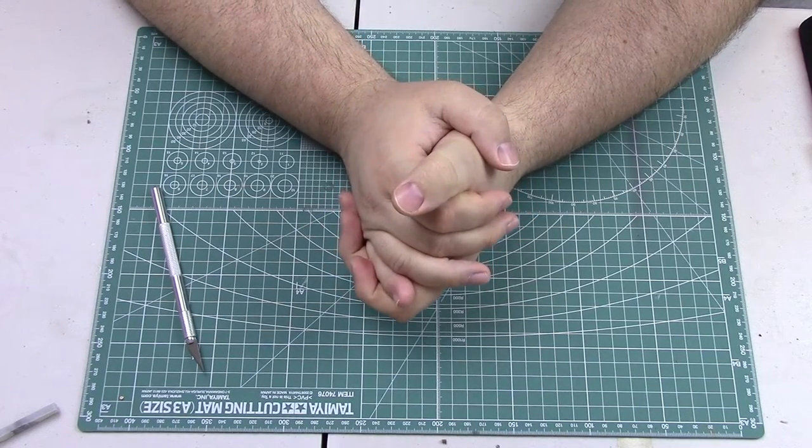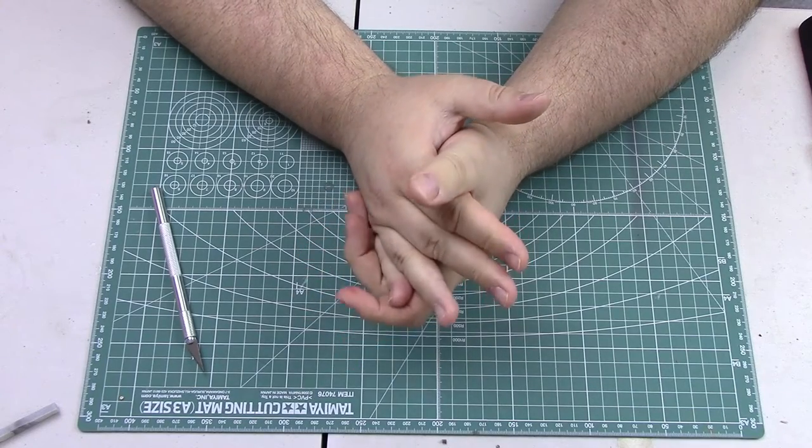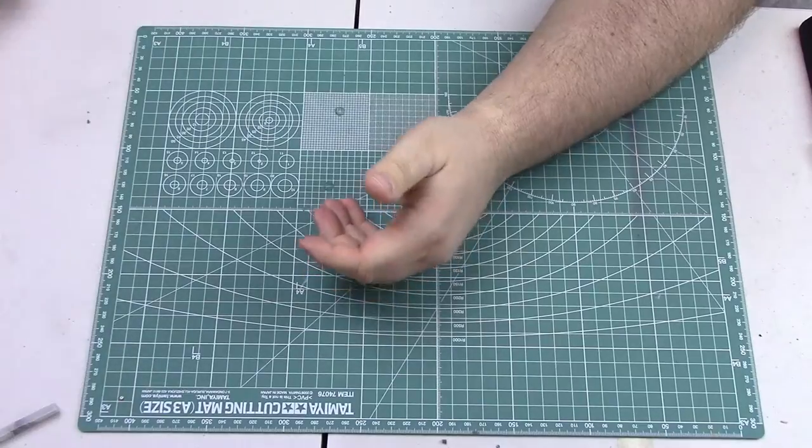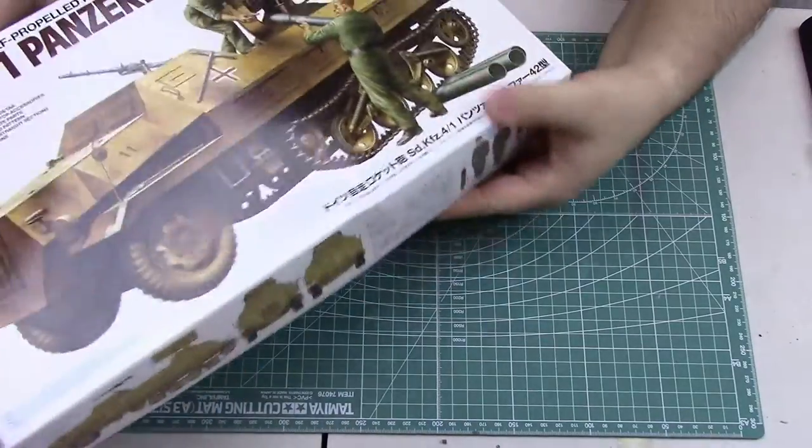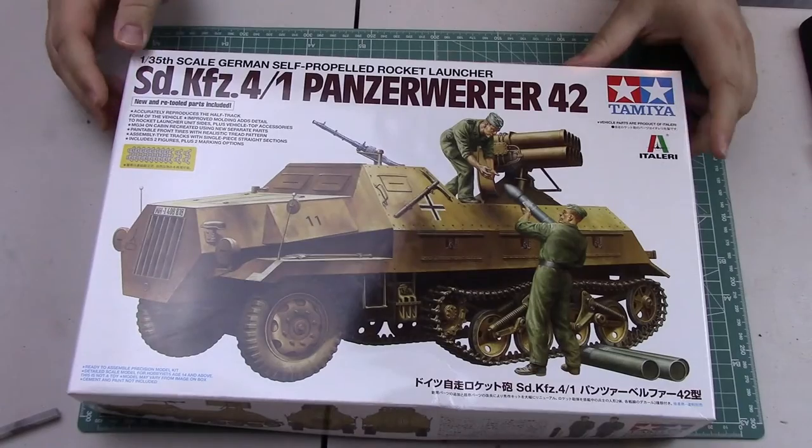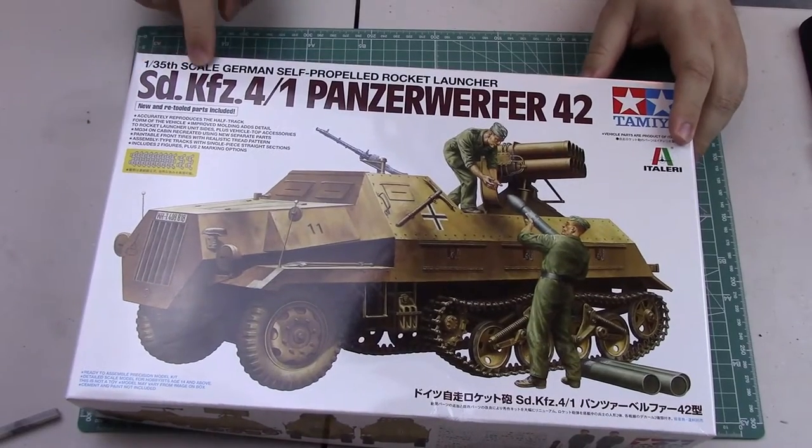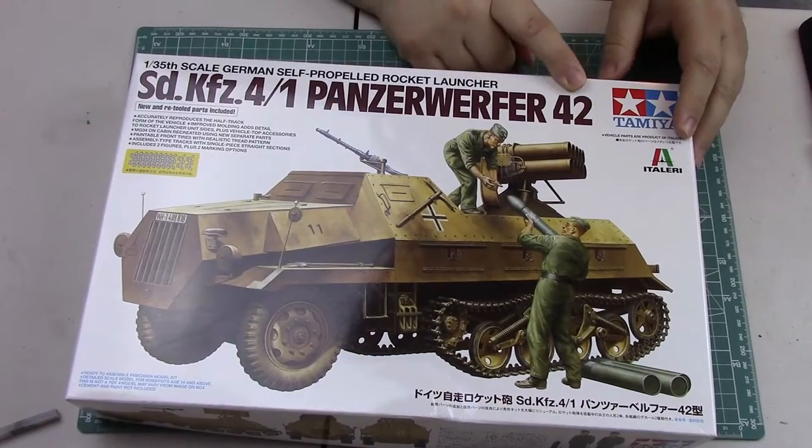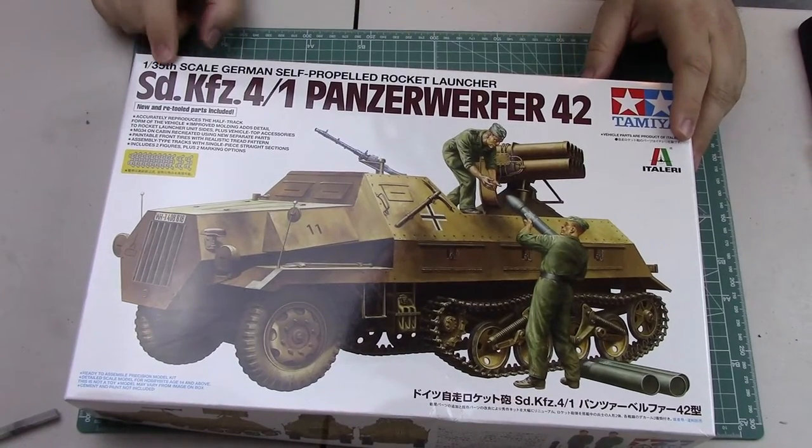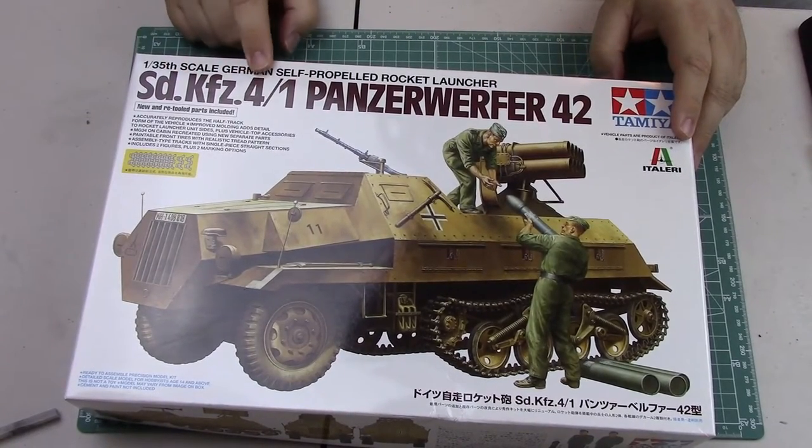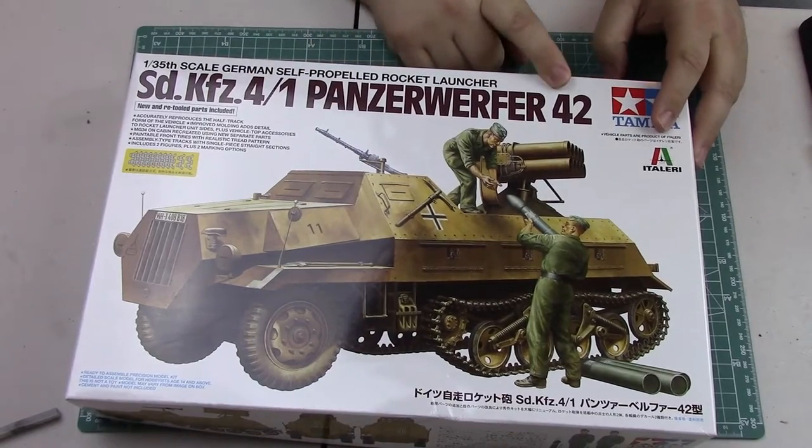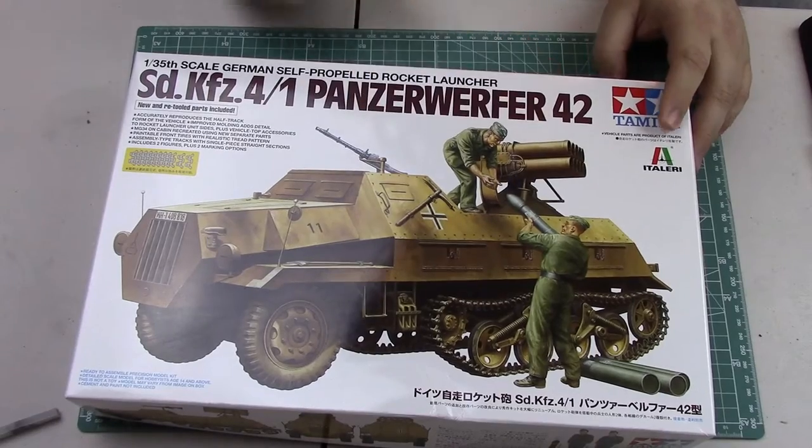It's a Tamiya kit, no surprise - you all know I love Tamiya. It's actually a bit of a rebox, a literary kind of rehash kit. This is the Sonderkraftfahrzeug 4, Strich 1, Panzerwerfer 42.